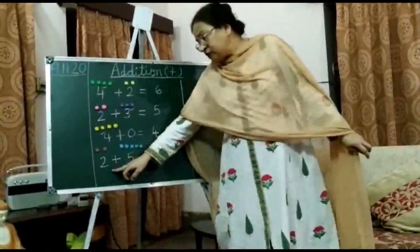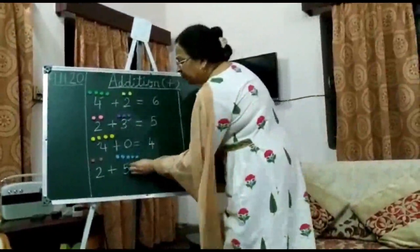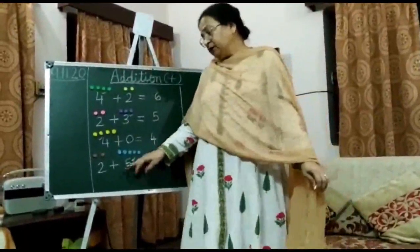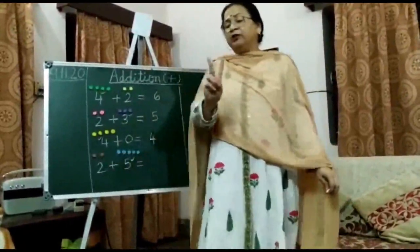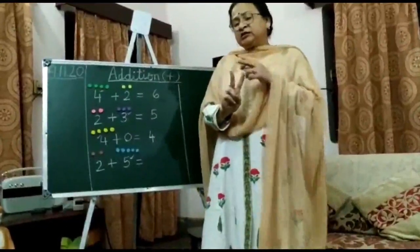The fourth sum is 2 plus 5. We put a tick on the bigger number, lock it in our mind, take out the smaller number on our fingers, and start counting: 6, 7.